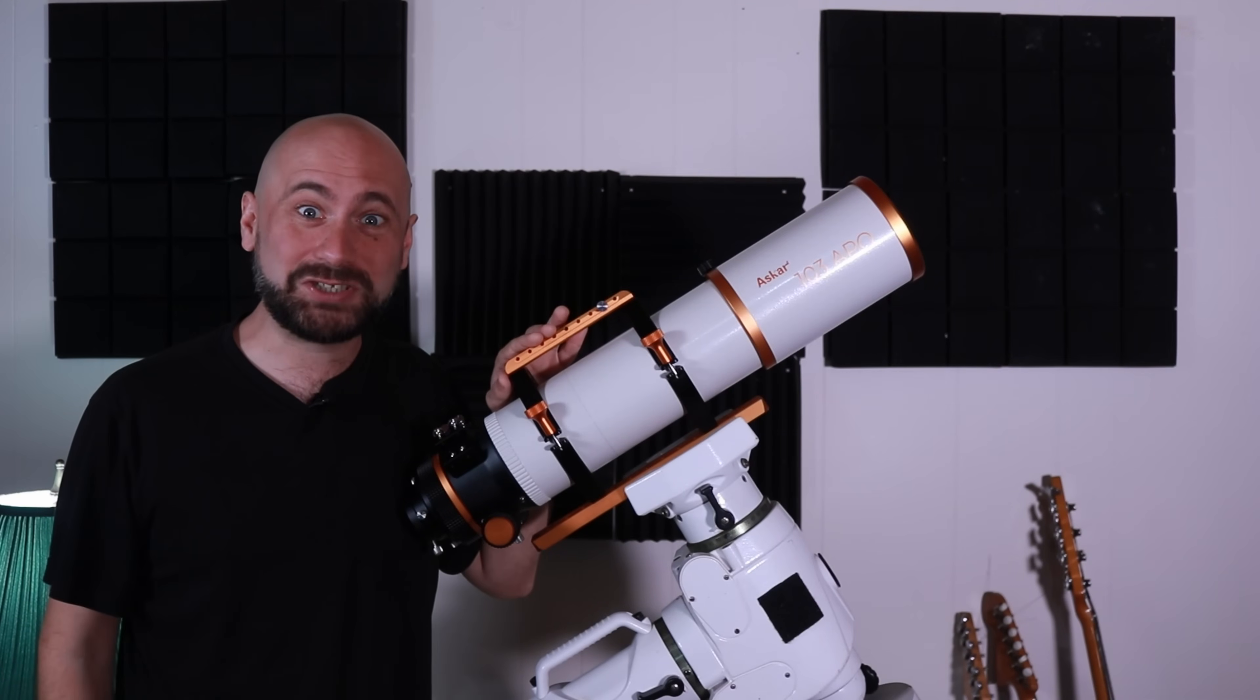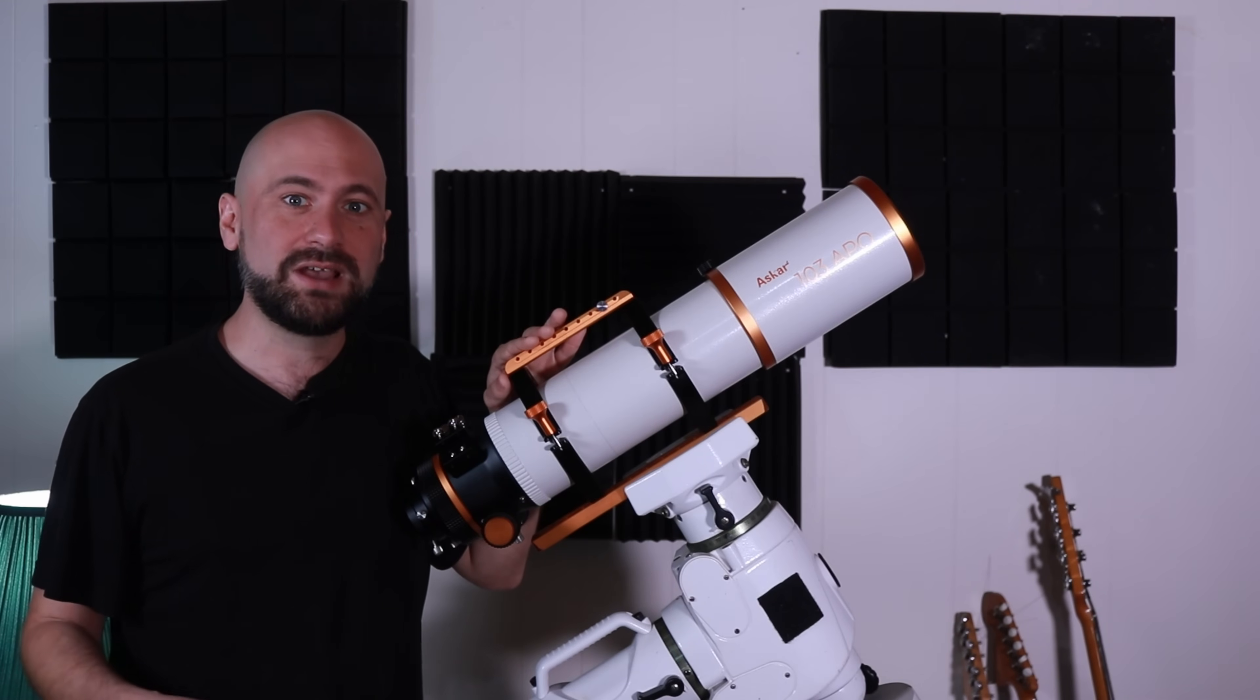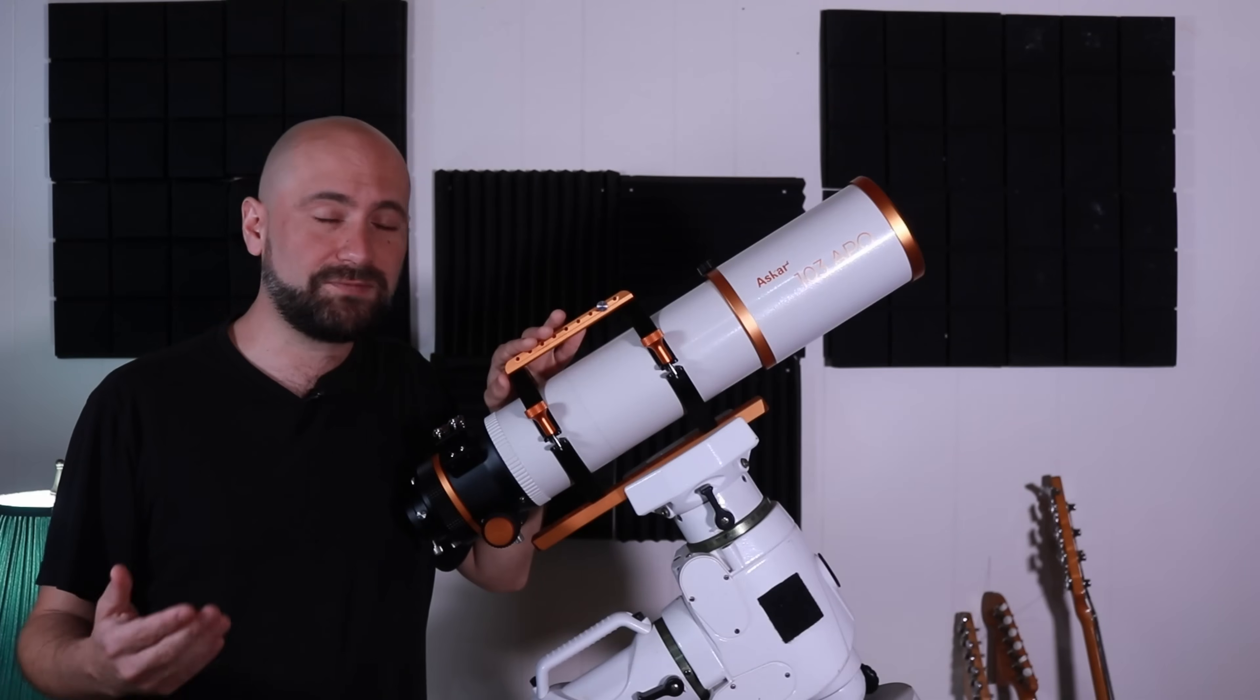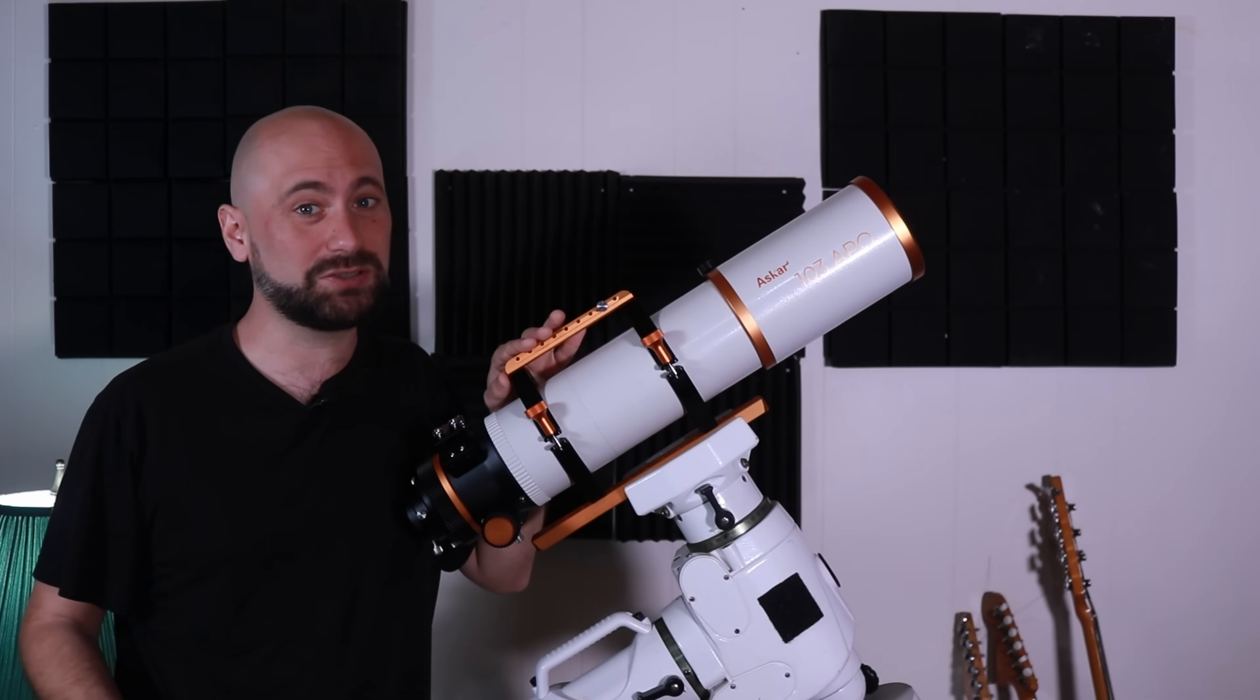This is the ASKAR 103 APO by Sharp Star. It's a triplet APO-chromatic refractor telescope. That means it uses three glass elements, one of which is ED glass, or extra low dispersion glass, to correct for chromatic aberration, also known as color fringing, also known as purplish blobs or halos around your stars.